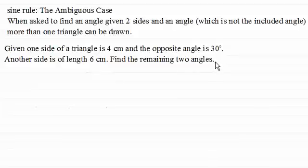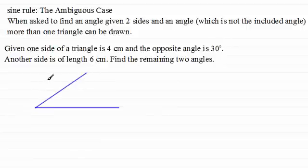Now if I was to draw this triangle, let's suppose I start with a baseline. Then I've got another side which is of length 6 cm and the angle opposite the 4 cm side has to be 30 degrees. So this is the side that is 6 cm and from here down to here is 4 cm, so this opposite angle will be 30 degrees.